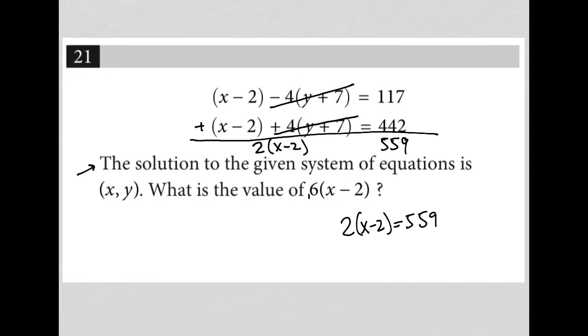I want the value of 6 times x minus 2. Well, if I multiplied the entire thing here by 3, then the 3 would distribute across the bracket, and I'd have 6 times x minus 2 is equal to 559 times 3, which I can just put in a calculator. So 559 times 3 is 1677.